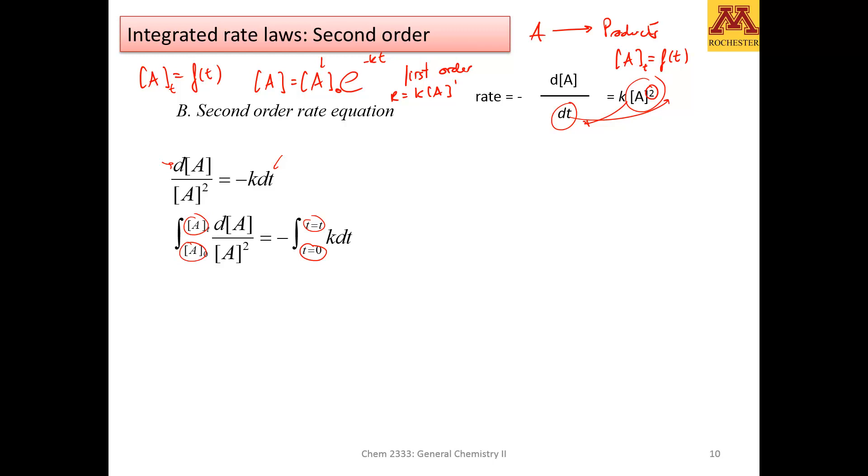Notice that the integral of 1 over x squared is minus 1 over x. If you're ever in doubt, you may remember the derivatives better than the integrals. If you derive the minus 1 over x, you should be able to find 1 over x squared. And that's between the limits, initial x and any given x.